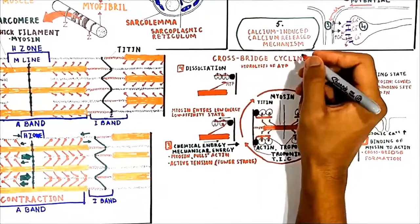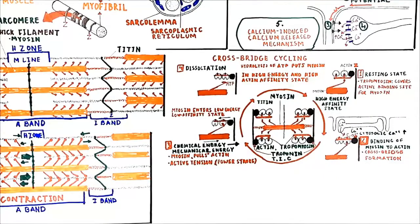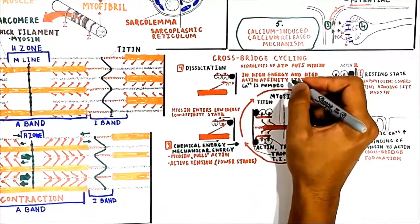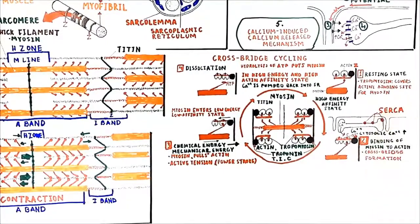Next, the hydrolysis of ATP puts myosin back into a high-energy, high-actin-affinity state. It is extremely important to know that ATP is not required to form the cross-bridge link to actin, but is required to break the link. When a cycle ends, calcium is pumped back into the sarcoplasmic reticulum by a calcium ATPase on the sarcoplasmic reticulum membrane called the sarcoplasmic/endoplasmic reticulum calcium ATPase (SERCA). The fall in cytosolic calcium causes tropomyosin to once again cover actin's binding sites for myosin, and the muscle relaxes, provided ATP is available to dissociate actin and myosin.